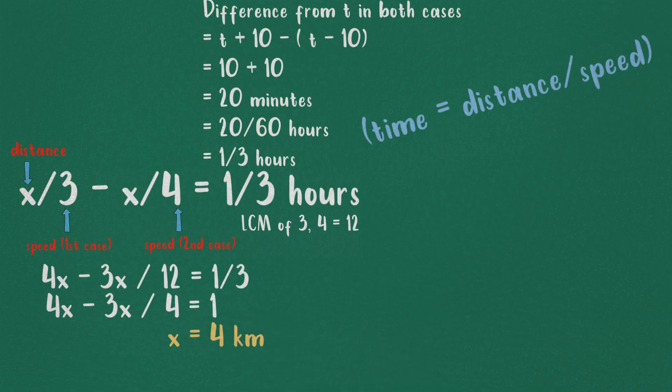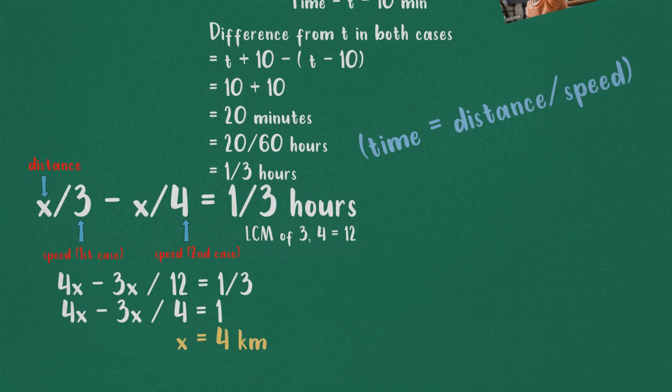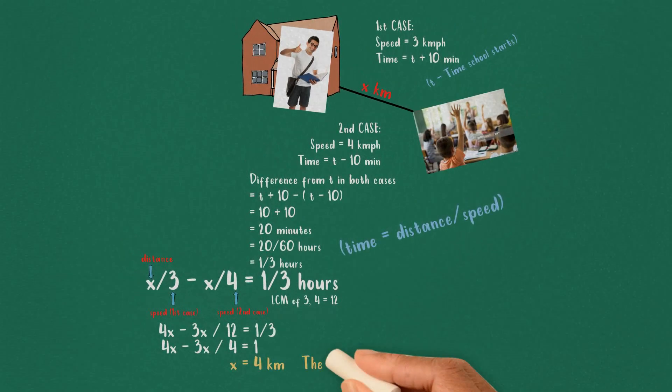Cross multiplying this, the value of x is 4 kilometers. The distance between his house and his school is 4 kilometers.